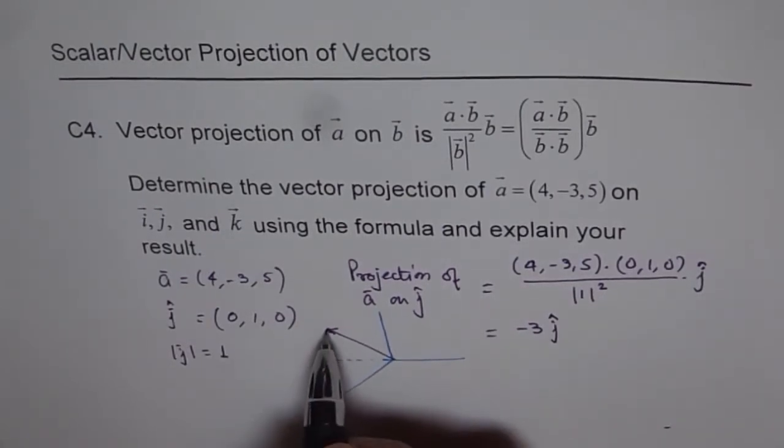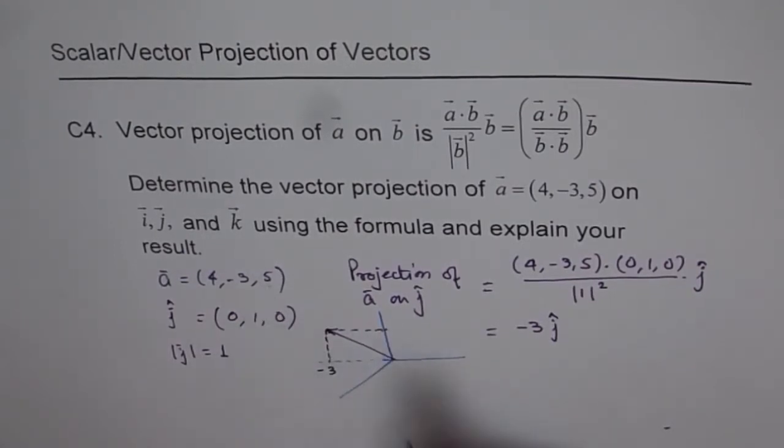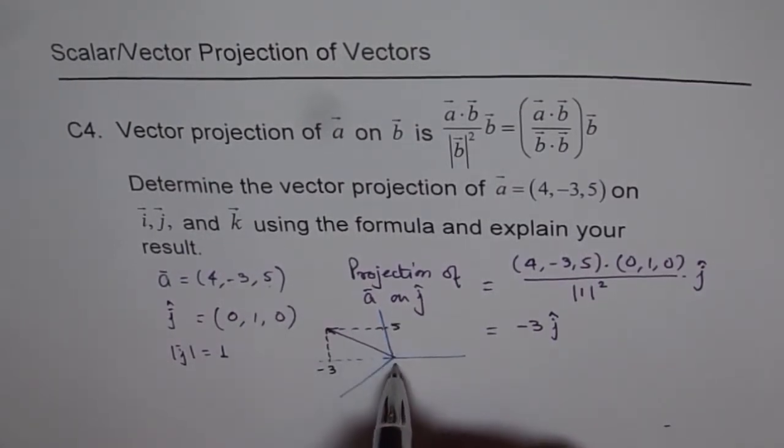That's how it is. If I draw a perpendicular to Z axis, then I get the Z component, which is 5. You see that?